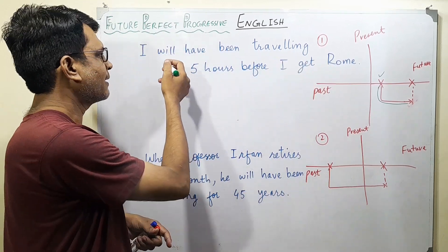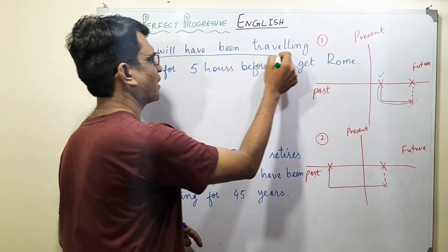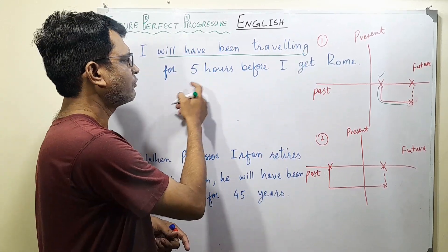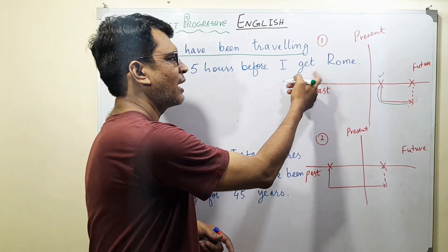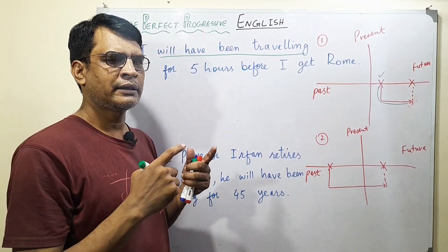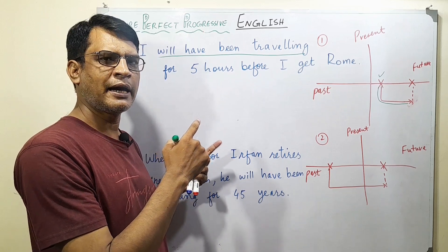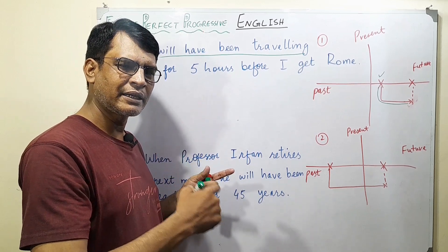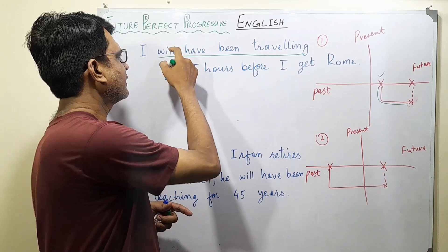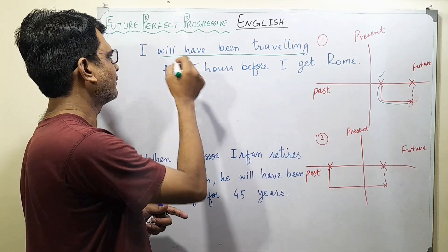Let's look at the example. The example is: I will have been traveling for five hours before I get to Rome. So two actions — one action that happens and then it will continue until another action occurs. In this case, "will have been traveling" is what we have.